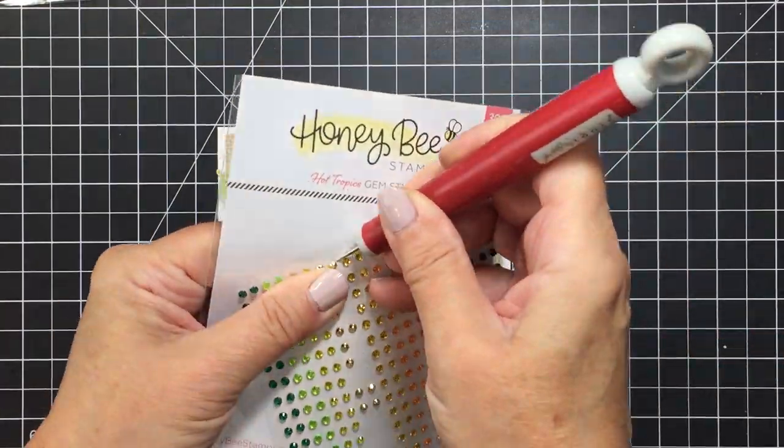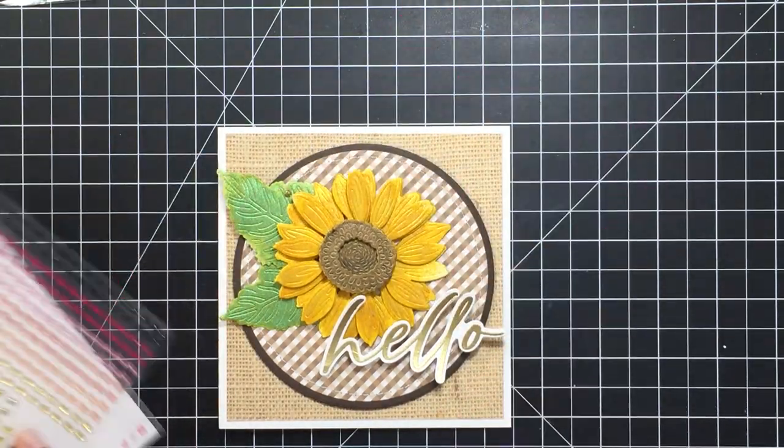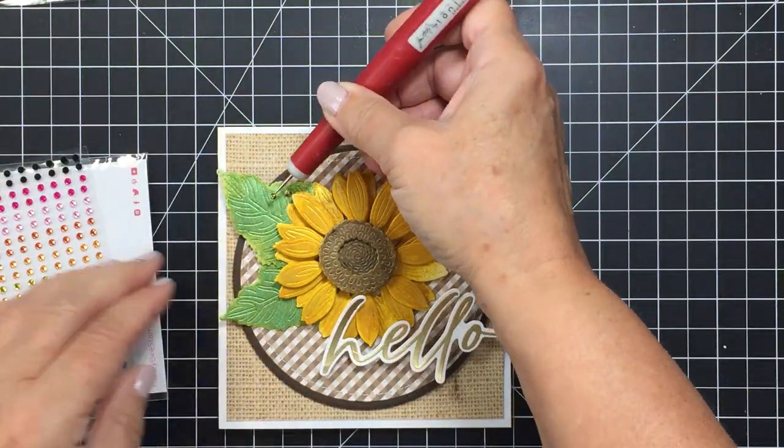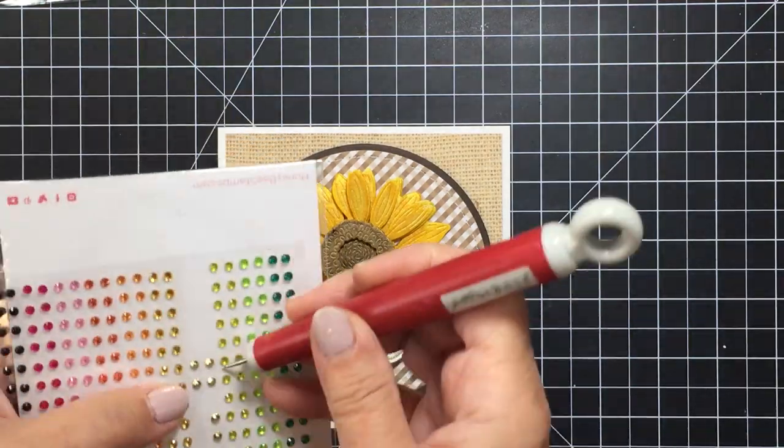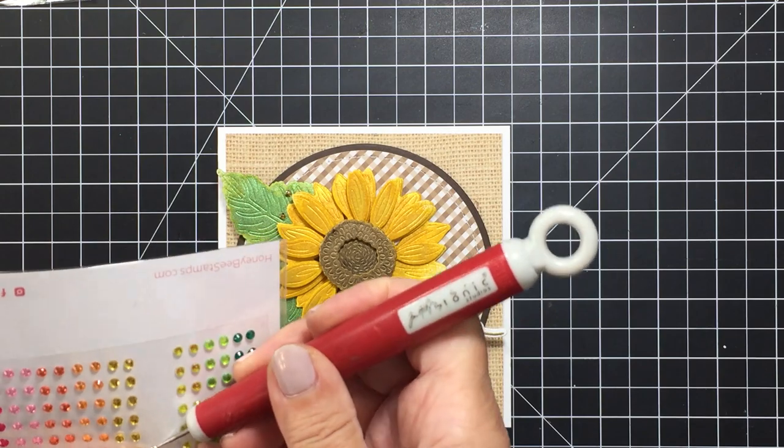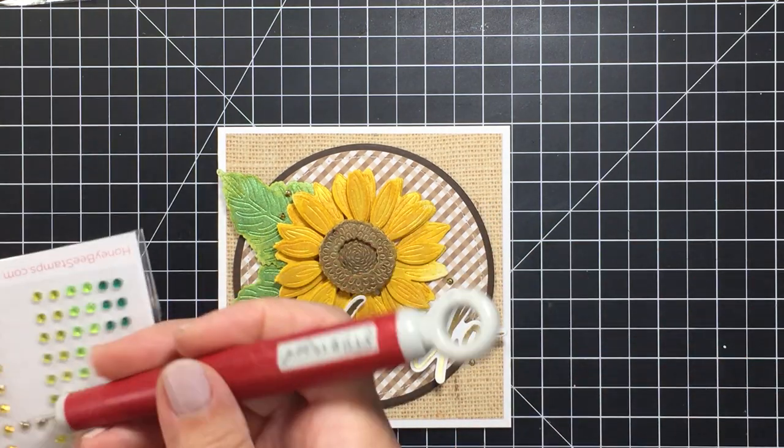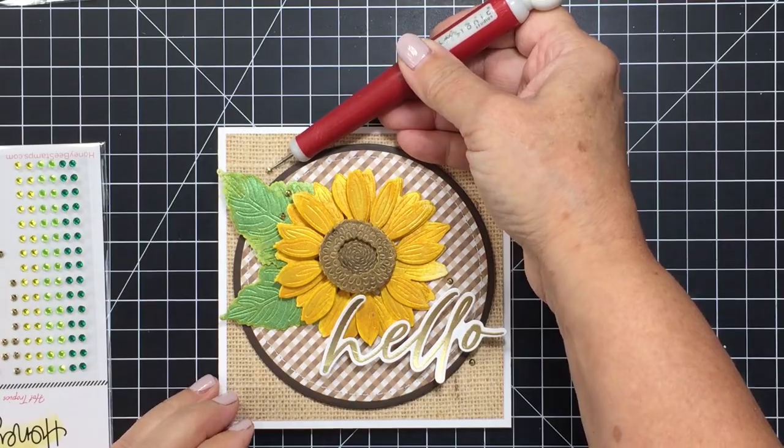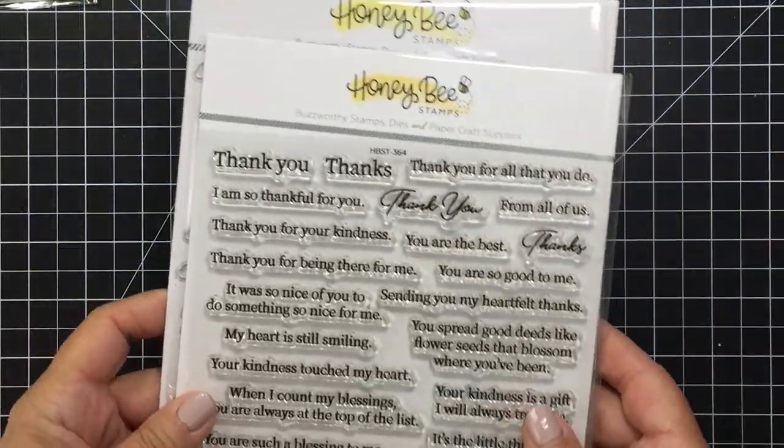I've die cut that out with the coordinating die for the Thinking of You Big Time set and now I'm taking some Hot Tropics gem stickers and I'm going to just put a few of these gems. I think I end up putting five of these gems around the card in a diagonal pattern from the top left corner down to the bottom right.